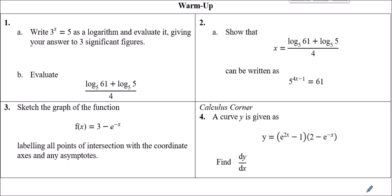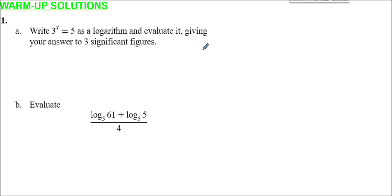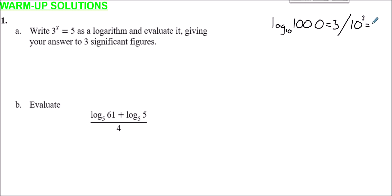So I'm going to carry on and do the solutions — check yours against mine. First of all, question one: we need to write 3 to the power x equals 5 as a log and evaluate it, giving our answer to three significant figures. 'Evaluate' just means solve, so this is a calculator question. I'm going to keep writing down something I used to use to remind myself how logs relate to each other: log base 10 of 1000 is 3, and 10 cubed is 1000. That slash means 'and', not divide — just my shorthand.